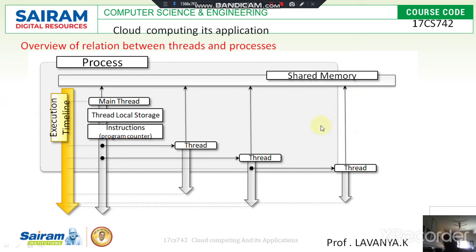In the shared memory, it works as an interface between the process as well as the execution timeline. All the sub-threads are interrelated to shared memory, meaning multiple threads are executed in this single platform. Everything is stored in memory — all the programs and applications which are executed on the process platform are stored in shared memory.